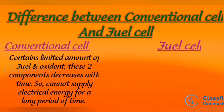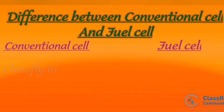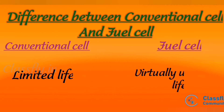In the case of a fuel cell, it can provide electrical energy for a long period of time. Regarding composition and process, a conventional cell contains a limited amount of fuel and oxidant; these two components decrease with time, so the device cannot supply electrical energy for a long period. But in the case of a fuel cell, it is continuously supplied with fuel and oxygen from an external source, which makes it work for a long period of time. Regarding life, a conventional cell has a limited life, while a fuel cell has a virtually unlimited life.